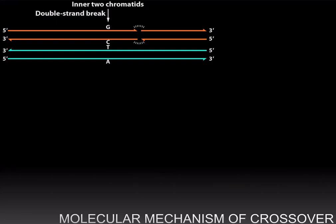Let us discuss the molecular mechanism by which crossover occurs. During Prophase 1, when the non-sister chromatids are synapsed,